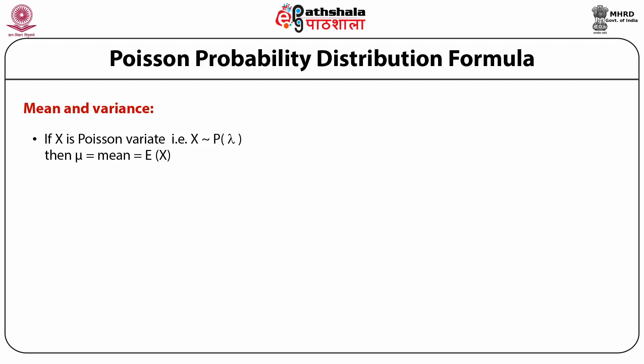Mean and variance: the mean is the expectation of x, and variance sigma squared equals E[(x - mu)²], which is also expressed as E(x²) - mu². Since E(x²) = m² + m and mu = m, so mu² = m², the m² terms cancel and the result is m. Therefore, in Poisson distribution, variance equals m and mean equals m — mean and variance are the same.